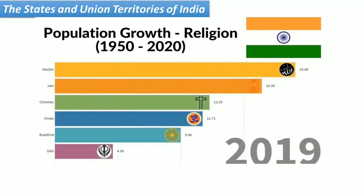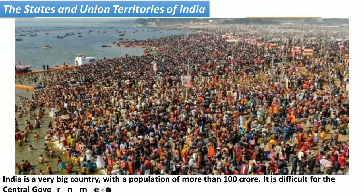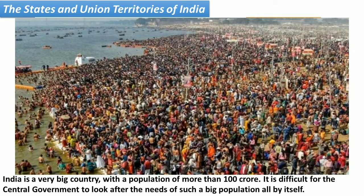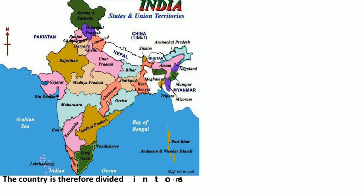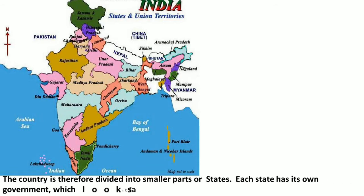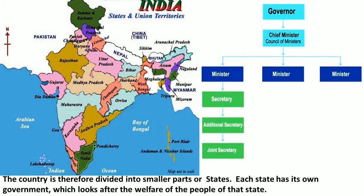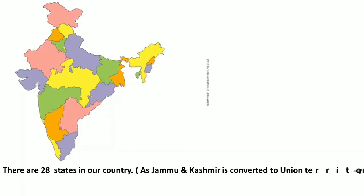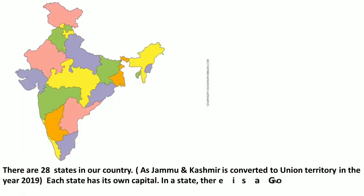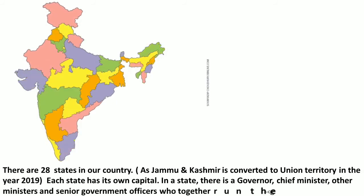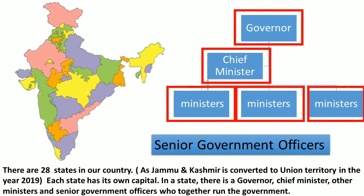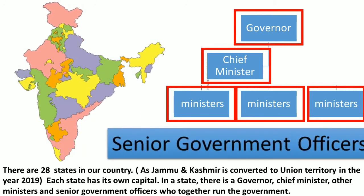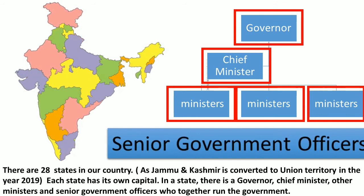India is a very big country with a population of more than 100 crore. It is difficult for the central government to look after the needs of such a big population all by itself. The country is therefore divided into smaller parts called states. Each state has its own government which looks after the welfare of the people. There are 28 states in our country, as Jammu and Kashmir was converted to a union territory in the year 2019. In a state there is a governor, chief minister, other ministers and senior government officers who together run the government. The governor and the chief minister live in the state capital.